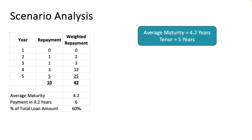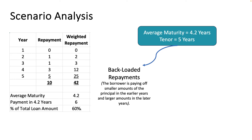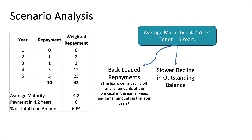An average maturity of 4.2 years out of 5 conveys back-loaded repayments. The borrower pays very small amounts in the earlier years and larger repayments only in the later years. The impact is a slower decline in outstanding balance because initial principal repayments are at a much slower pace. In terms of risk, it is longer risk exposure for the lender because till a later period no big repayments are happening, so the risk level is high.